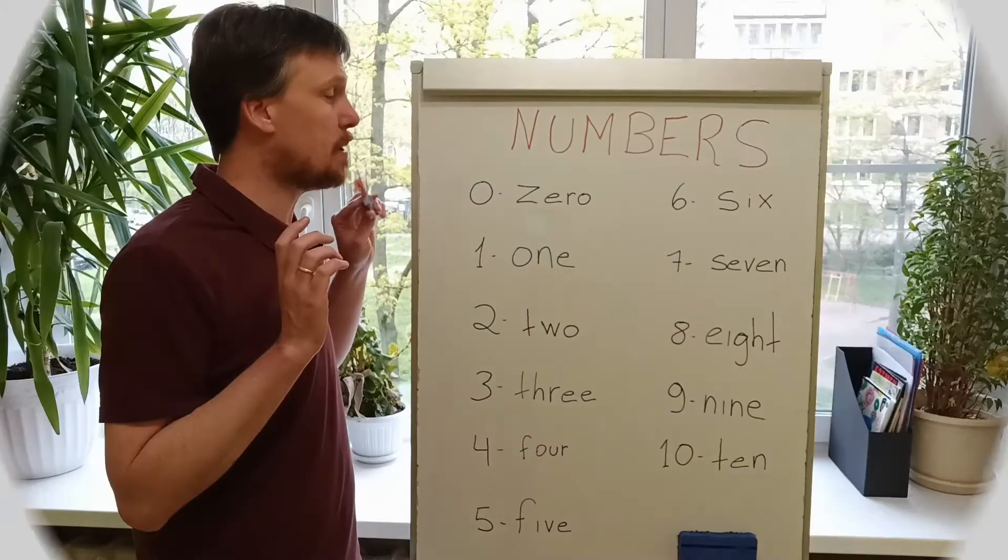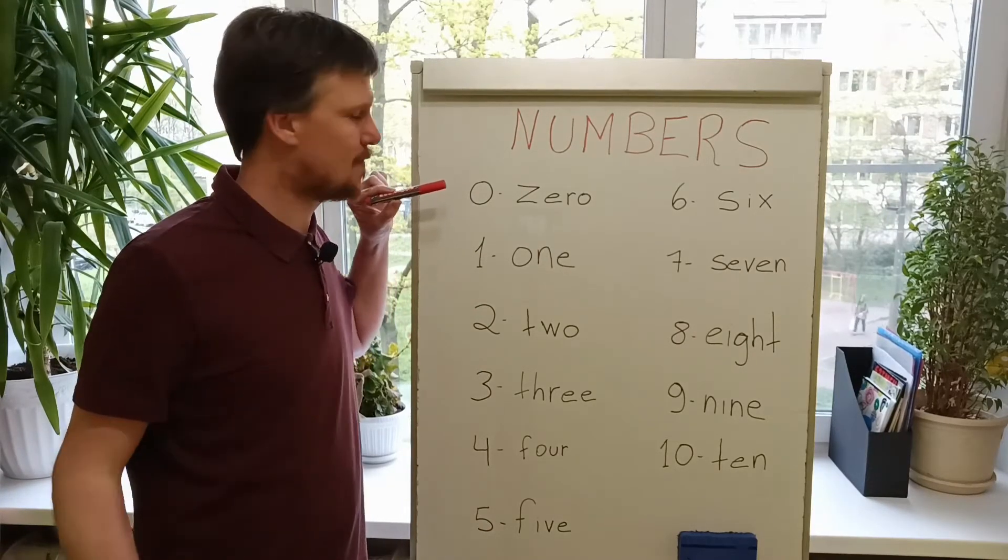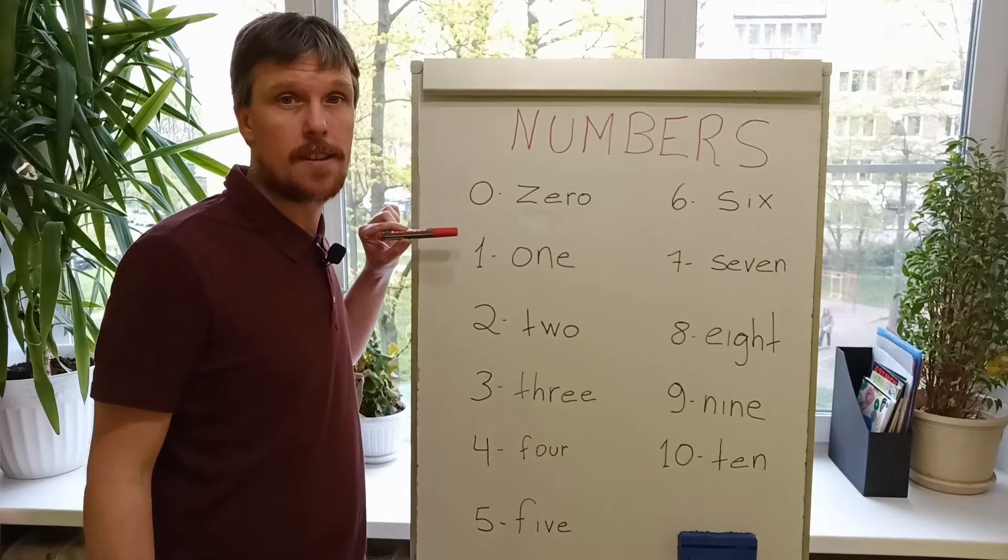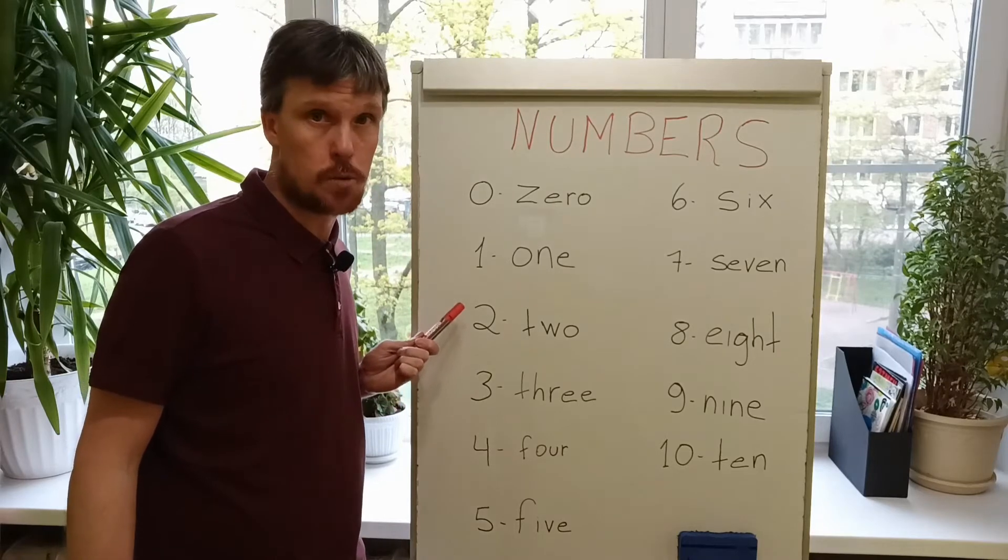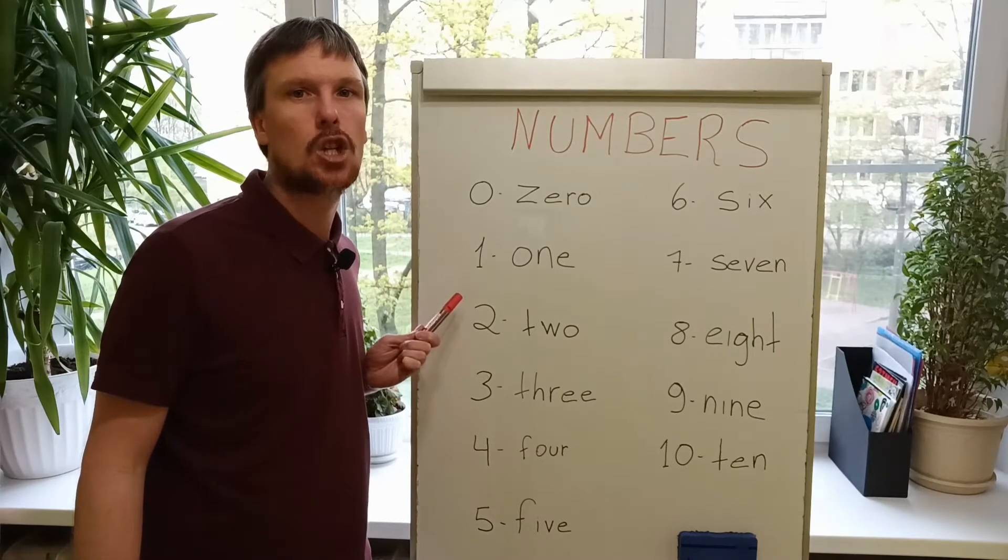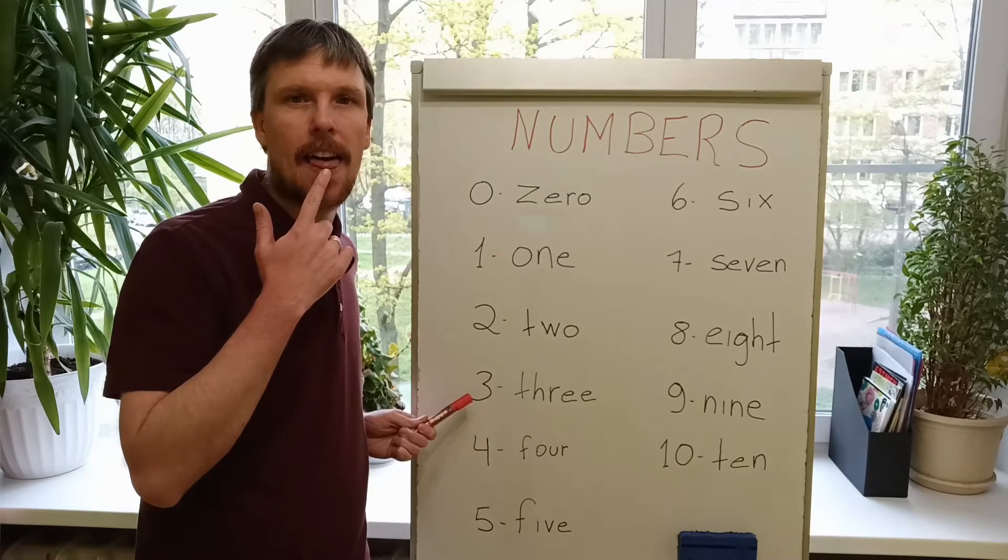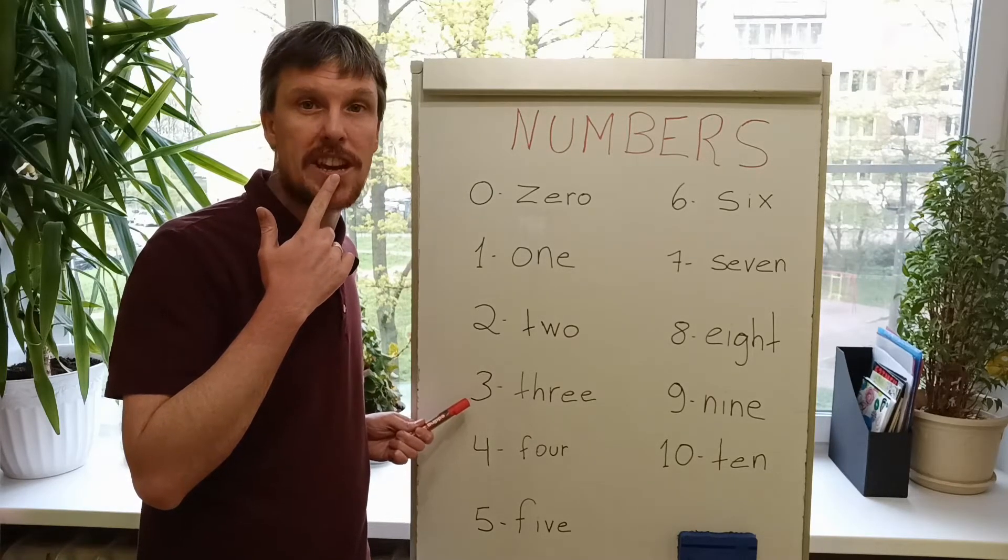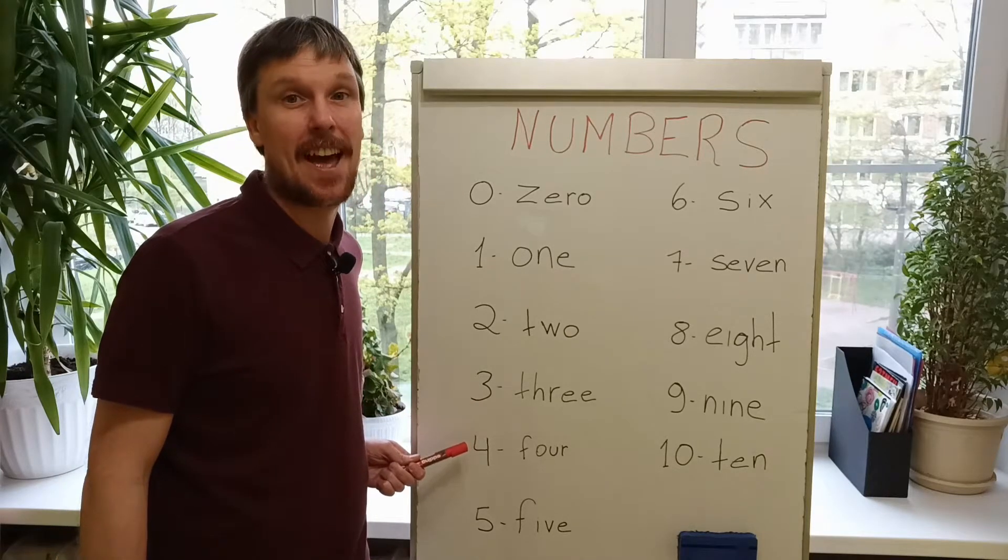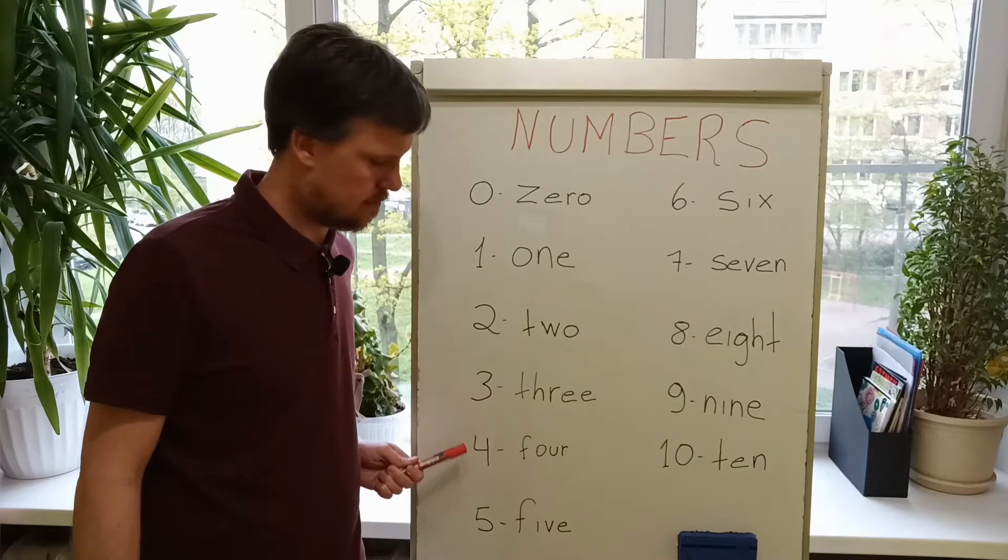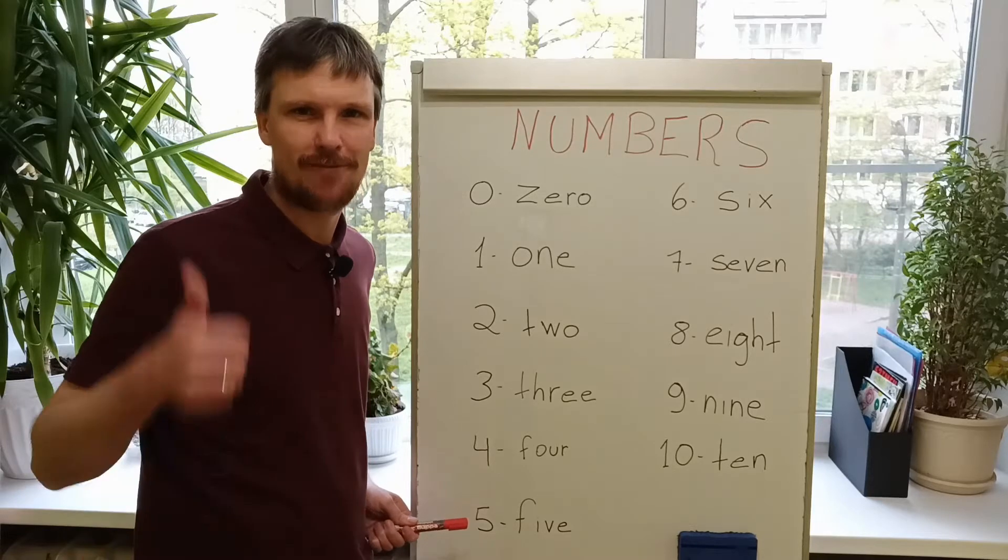Repeat. Zero. Zero. One. One. Two. Two. Three. Three. Four. Four. Five. Five. Very good.